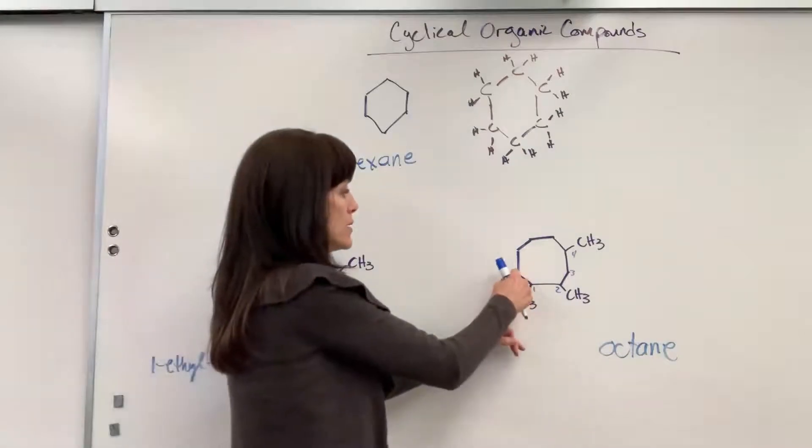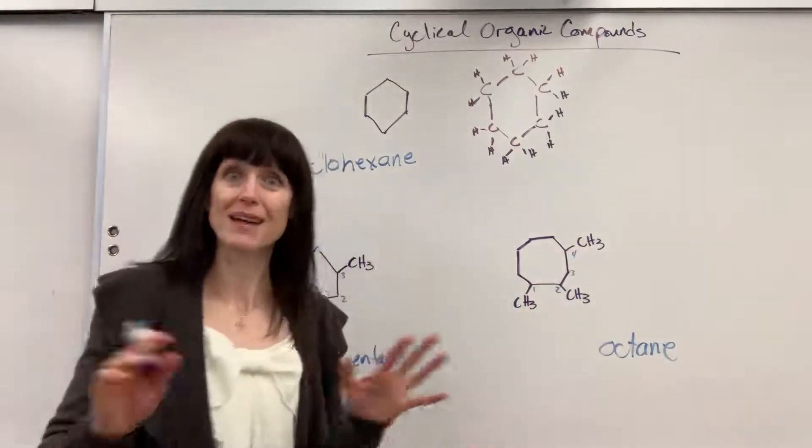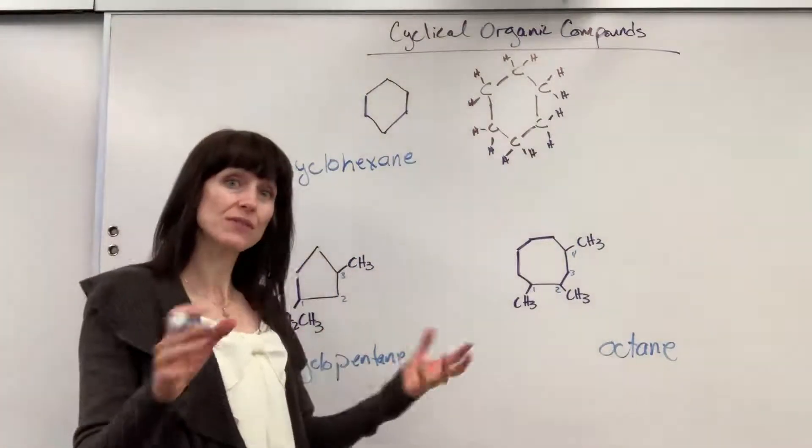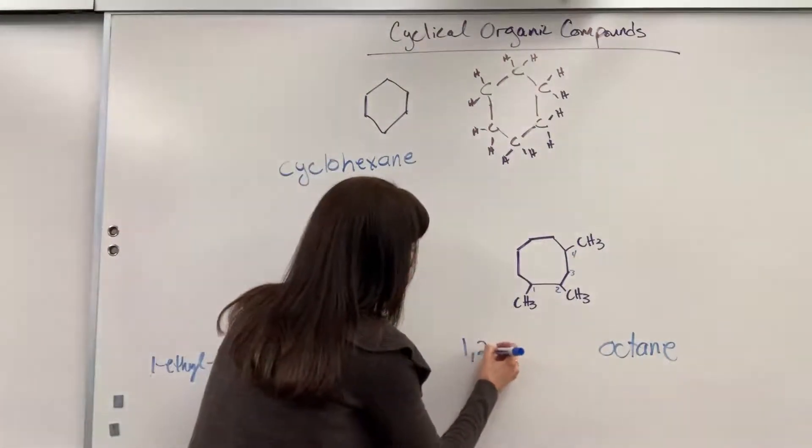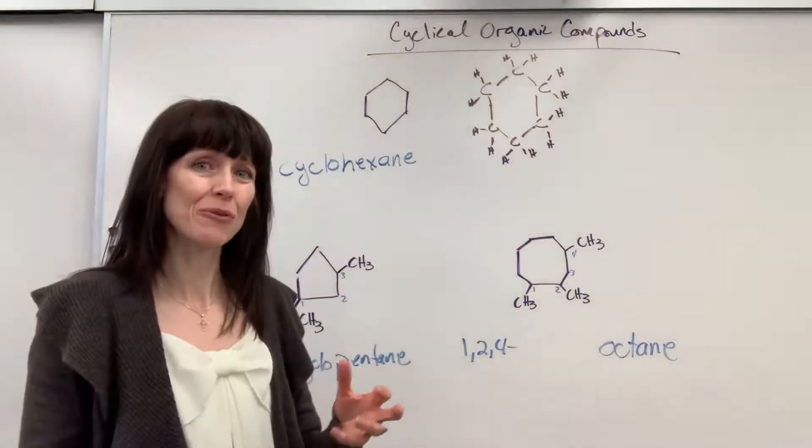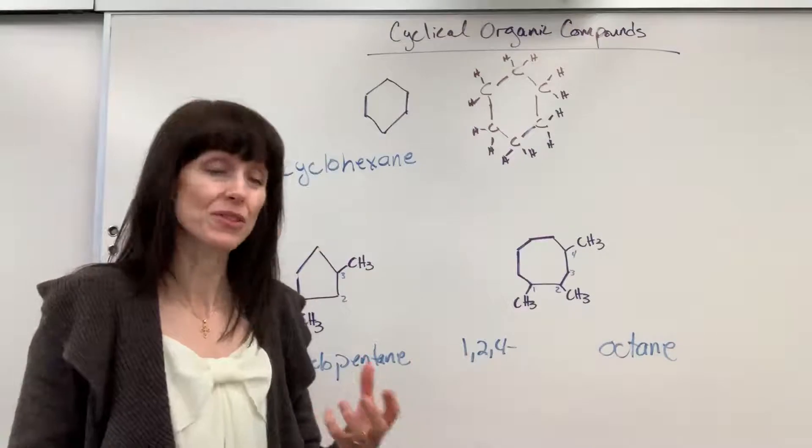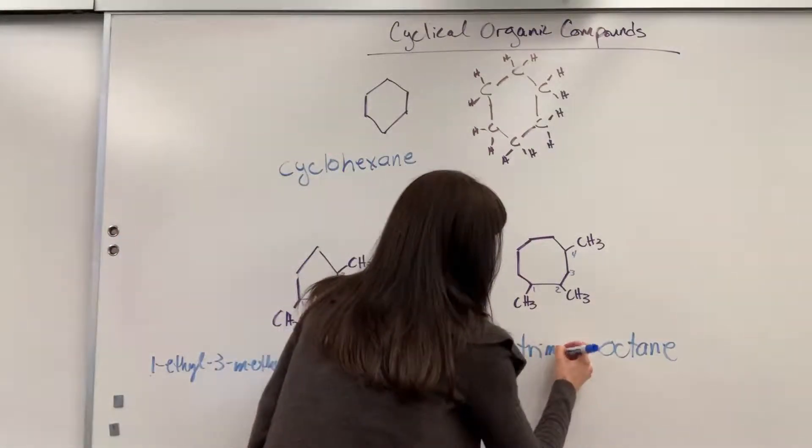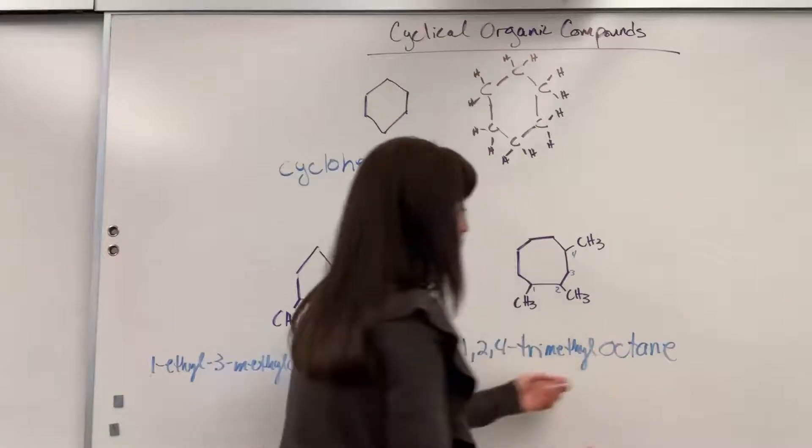And of course, I wouldn't go one, two, three, four, five, six. That would give me bigger, even bigger numbers. Okay, so let's give the address for each of these methyl groups. We have one, two, and four. And I've got three methyl groups. So you'll recall we have to tell the reader that we've got three. That will be 1,2,4-trimethyl-cyclooctane.